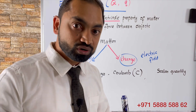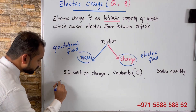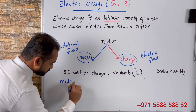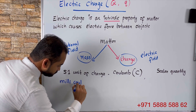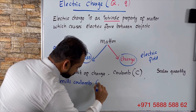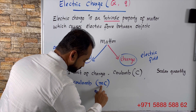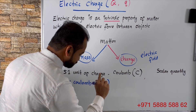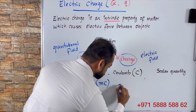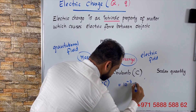To represent smaller charges, we use millicoulomb. We use the prefix millicoulomb, represented as mC — m for milli, C for coulomb. Millicoulomb is equal to 10 to the power negative 3 coulomb.